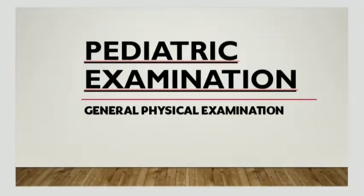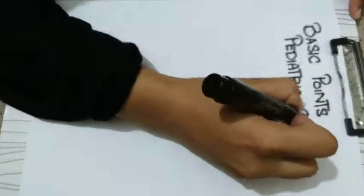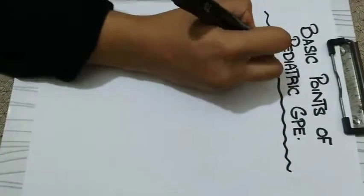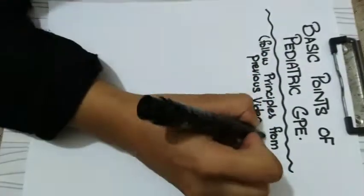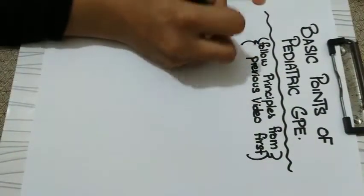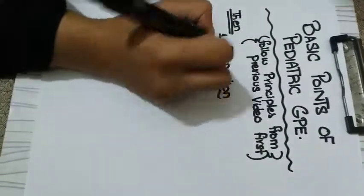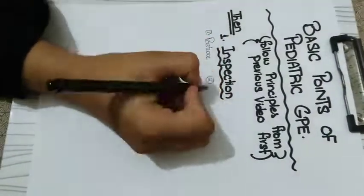We will begin the basic principles of pediatric general physical examination. First, you must follow the points discussed in the previous video about the basic principles that must be followed before the start, like introduction, consent, greeting, and so on. Then we will do the inspection.